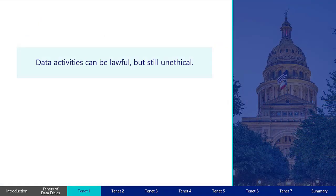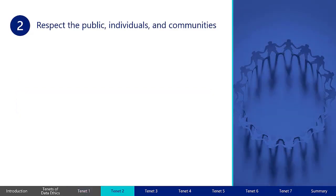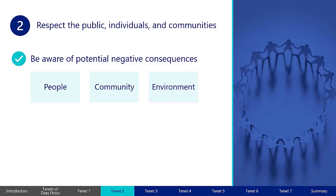You should be aware that data-related activity can be lawful yet still be unethical. In other words, legal compliance does not always guarantee and enforce ethical behavior. Which leads us to the second tenet: respect the public, individuals, and communities. Data users may collect, use, or share data legally, but when analyzing and making decisions based on that data, they must be aware of any potential negative consequences to people, the community, or the environment due to issues such as incomplete data, misinterpretation of results, or underlying biases and discrimination.